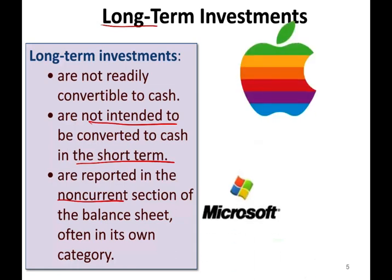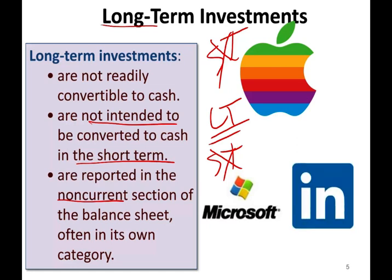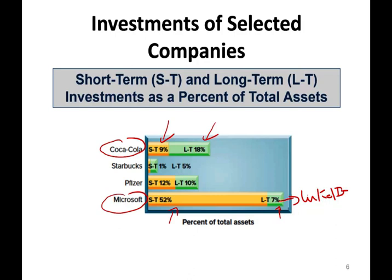We're talking about Apple and Microsoft — the same companies could be short-term or long-term investments. What does it depend on? It depends on your intention. Also, long-term investments — like when Microsoft purchased LinkedIn — that's a long-term investment. They bought LinkedIn to have it as part of their company, not to sell it in the near future. This is a breakdown of sample companies: Coca-Cola has 9% short-term and 18% long-term investments as a percent of total assets. Microsoft has a lot of short-term investments because they buy treasury bills with their cash, and 7% long-term — which includes LinkedIn.